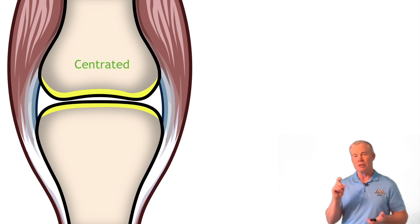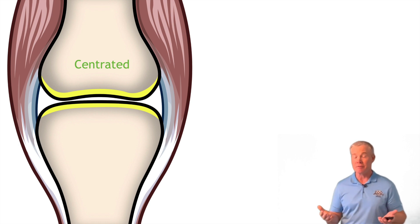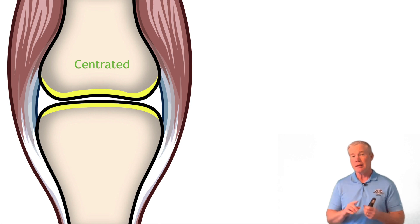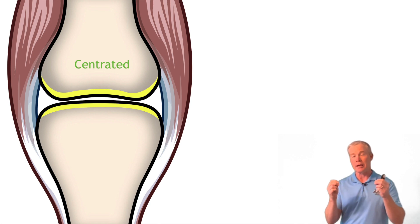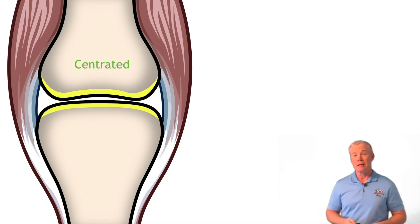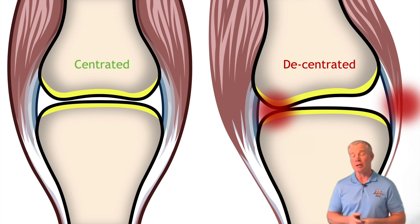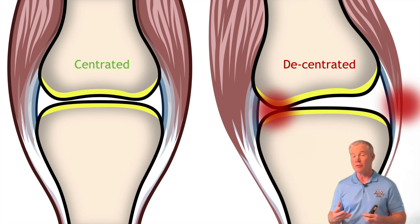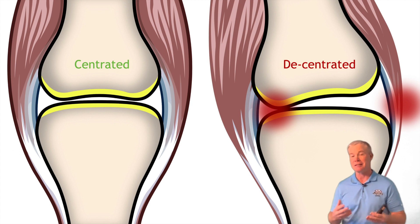If my index finger is centrated, I can make this movement thousands and millions of times without any trouble. But in reality, there are forces acting on each of those joints, like rubber bands. If one of those rubber bands is much thicker and denser than the other one, now my joint becomes decentrated, which throws it off center, causes some compression of cartilage, which causes inflammation, stickiness, and stuck.